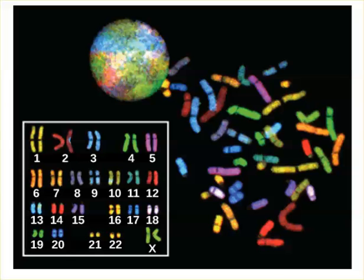In one of the earlier chapters we covered this quarter, we talked about the difference between prokaryotic and eukaryotic cells, in that eukaryotic cells have a nucleus, and within that nucleus is contained the nuclear DNA. Prokaryotic cells have DNA associated with them, but it's not contained within the nucleus.